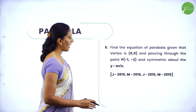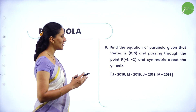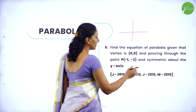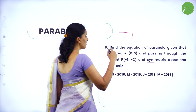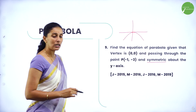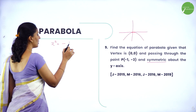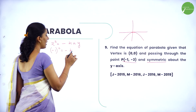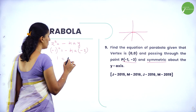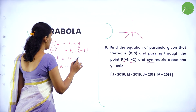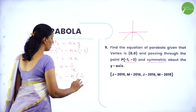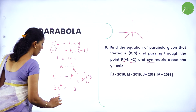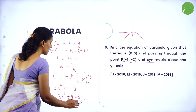Find the equation of parabola with vertex (0, 0), passing through the point (minus 1, minus 3), and symmetric about the y-axis. Since the point is at (minus 1, minus 3) in the third quadrant and the parabola is symmetric about the y-axis, it is a downward parabola: x² = minus 4ay. Substituting x = minus 1 and y = minus 3, we get 1 = 12a, so a = 1/12. Substituting: x² = minus 4 × (1/12) × y, which simplifies to 3x² = minus y, or 3x² + y = 0.